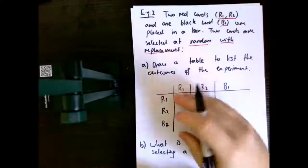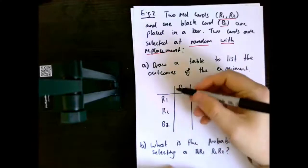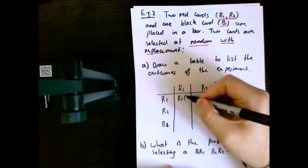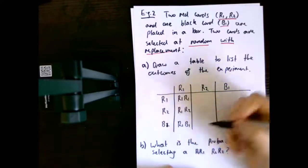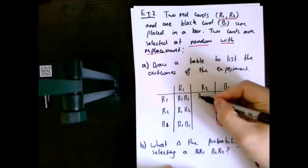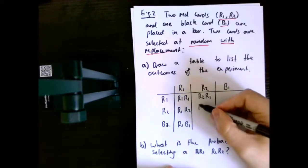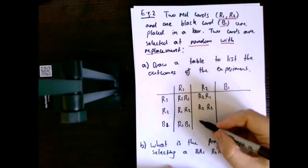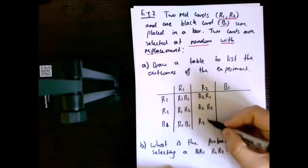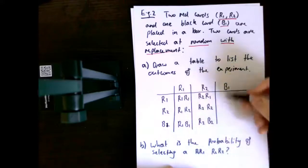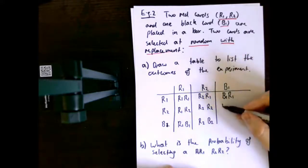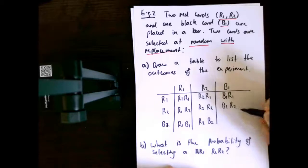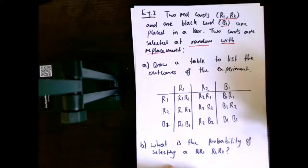Then for each one of these that I draw, when I put it back in, I can now draw a red one card, a red two card, and a black one card. So let's just go through and label out all of the outcomes. We can have red one, red one; red one, red two; red one, black one. Then red two first, then red one second; red two, red two; red two, black one. And then finally, black one first, followed by red one; then black one, red two; and then black one, black one.